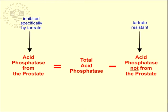The total activity of the acid phosphatase increases in the case of Paget's disease, Gaucher's disease or deficiencies of beta-glucosidase, and Niemann-Pick disease, which involves deficiency of sphingomyelinase, and myelomonocytic leukemia.